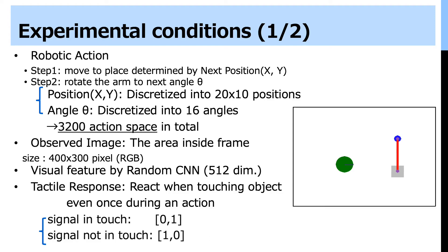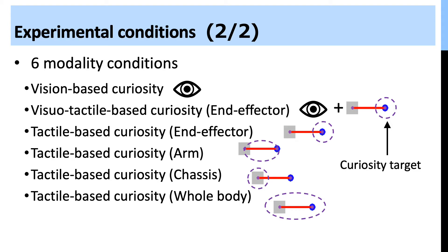Robotic actions consist of two steps. Step 1 is the agent's movement to the next position. After movement finishes, the agent rotates the arm to angle theta. The position and angle are discretized, giving an action space of 3,200 actions in total. The observed image covers the whole area inside the frame at 400 by 300 pixels from a top view. The visual feature is calculated by a random CNN, producing a 412-dimensional vector. Tactile response is 2-dimensional: if the agent touches the object with a body part during an action, the tactile response is 0-1; otherwise it is 1-0.